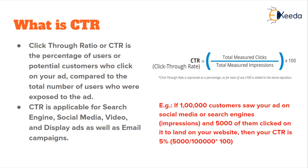There's a very simple formula to calculate CTR or click-through rate: it is total measured clicks divided by total measured impressions, multiplied by 100. How do you find out what the total measured clicks or total measured impressions are?